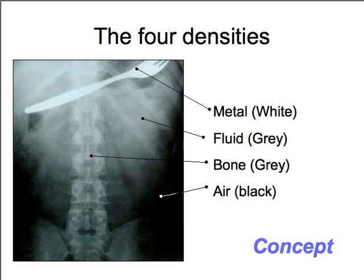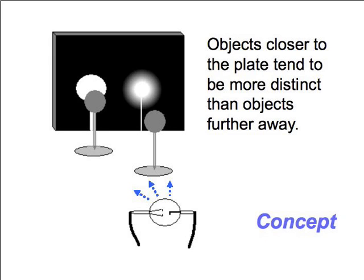Here are the four densities: metal, fluid, bone. The plate is of course black where nothing blocked the x-rays from hitting the plate. Another concept you should know is that items closer to the plate tend to be more distinct than items that are further away. With the basic concepts out of the way, let's talk about a couple of common presentations or positions for the chest x-ray.